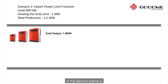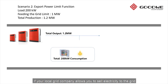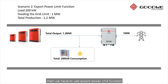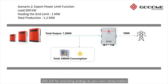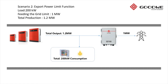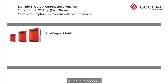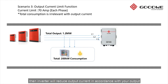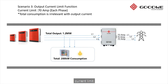In the second scenario, if your local grid company allows you to sell electricity to the grid with a 1 megawatt upper limit, then we have to use the export power limit function and the inverter will produce 1.2 megawatt instead of 1.5 megawatt — 200 kilowatt for your own consumption and 1 megawatt directly goes to the grid. In the third scenario, if you have an output current limit such as 70 amps per each phase, the inverter will reduce the output current in accordance with your output current limit.